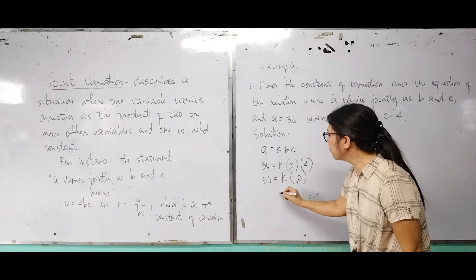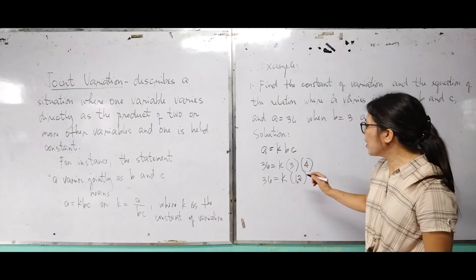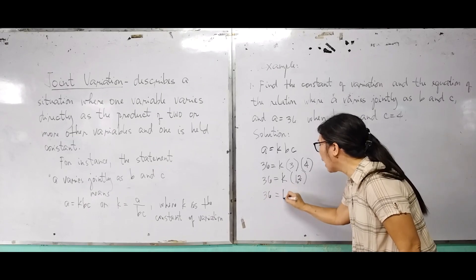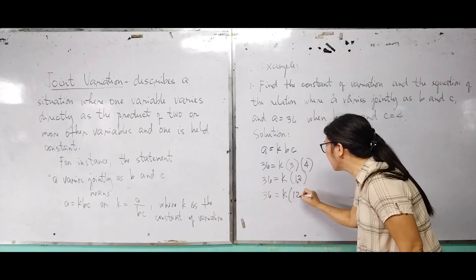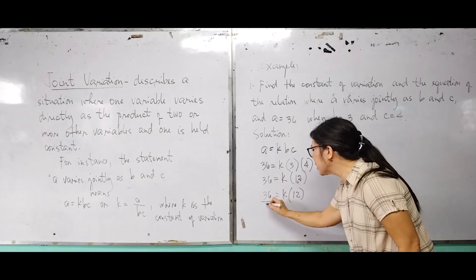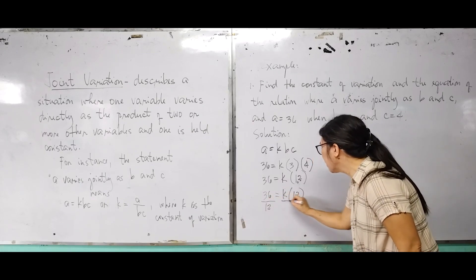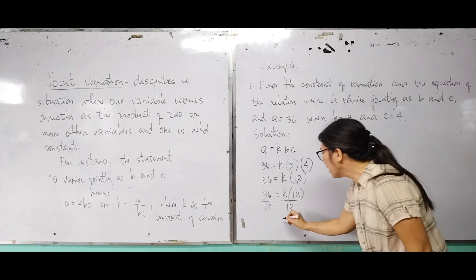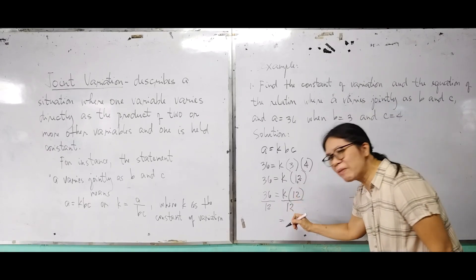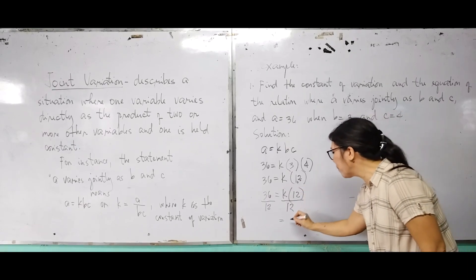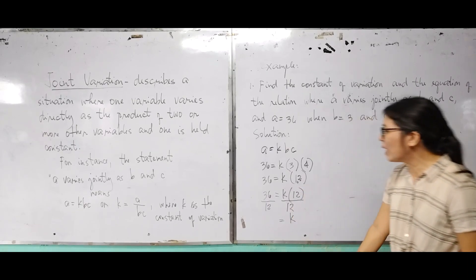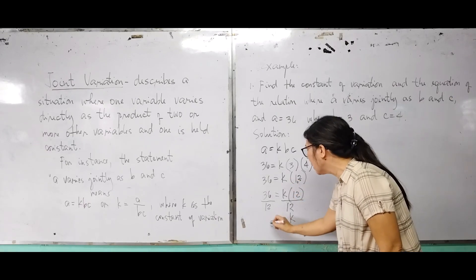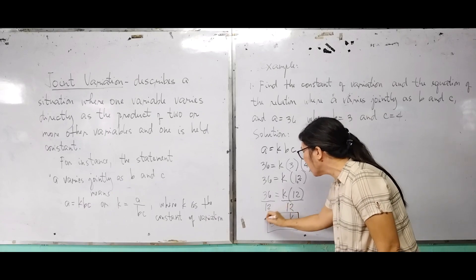To solve for K, we will divide both sides by 12. Divide 36 by 12 on the left side, and 12 divided by 12 equals 1 on the right side. So we have K equals 36 divided by 12, which is 3.